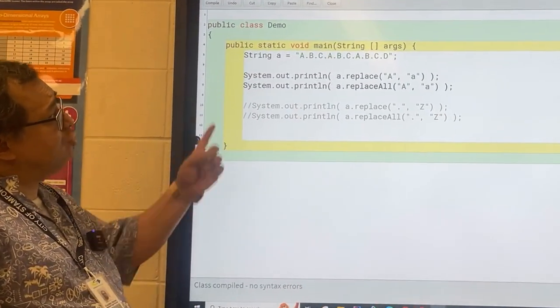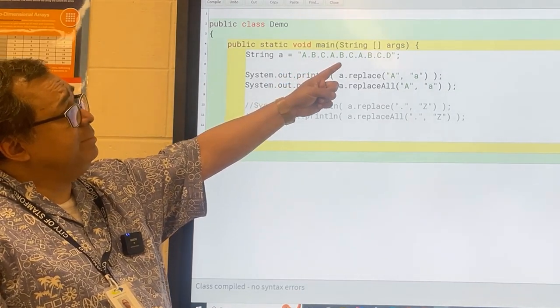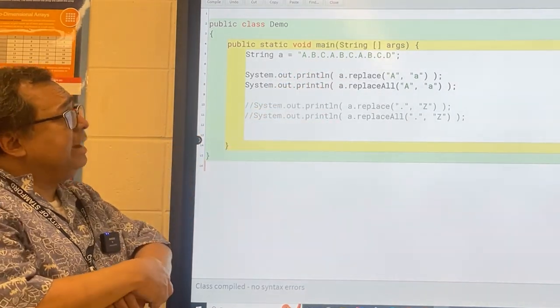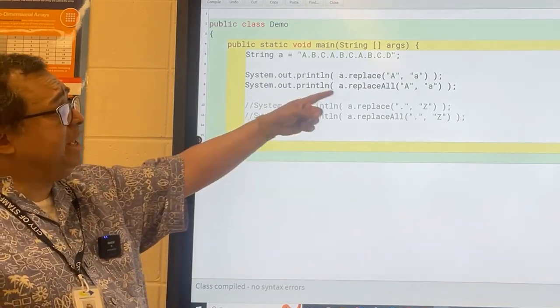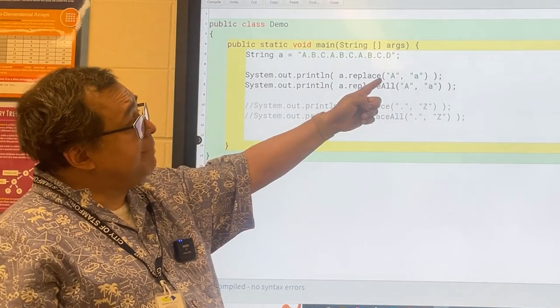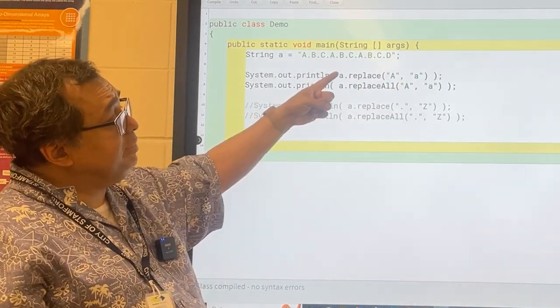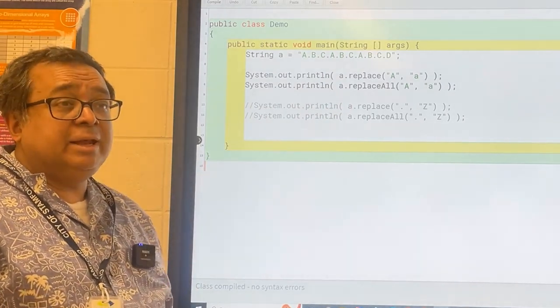So let's look at this string that I have here. It says A dot B dot C dot A dot B dot C dot, and then like that, right? And I've got two replace commands here. These are string commands. The first one replaces the capital A with an a, and the second one also does the same thing. But the first one is a replace command, and the second one is a replaceAll command.